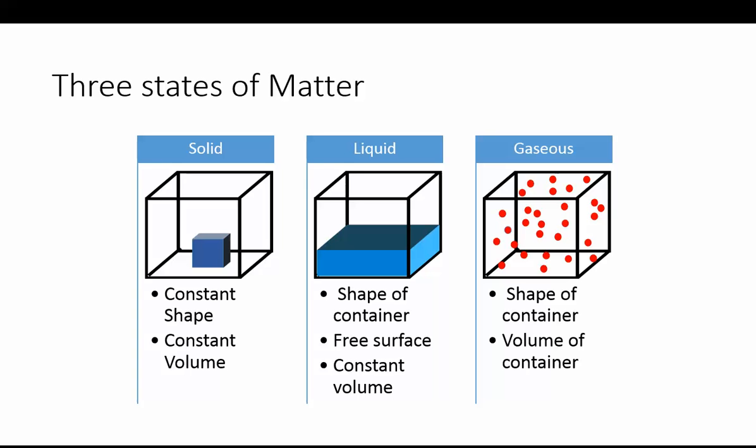So what are these different states of matter? Matter exists in three common states: solid, liquid and gaseous. Solids tend to have a constant shape and a constant volume. Liquids tend to take the shape of container but the volume remains constant. Gases on the other hand tend to take the shape of container and the volume of container.